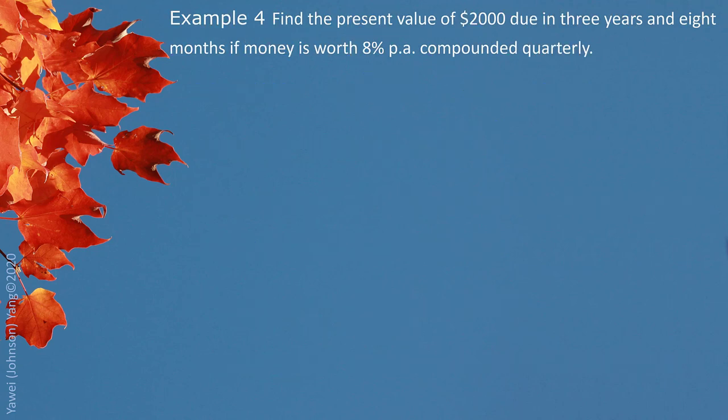Example 4: Find the present value of $2,000 due in 3 years and 8 months if money is worth 8% compounded quarterly. Basic information — $2,000 is the future value, and the periodic interest rate is 8% divided by 4. For the compounding period of 3 years and 8 months, we need to convert to quarters. 3 years gives us 36 months, plus 8 months gives us 44 months. Each quarter has 3 months, so 44 divided by 3 gives us the number of quarters. We keep this as a fraction rather than a repeating decimal to keep the value exact.